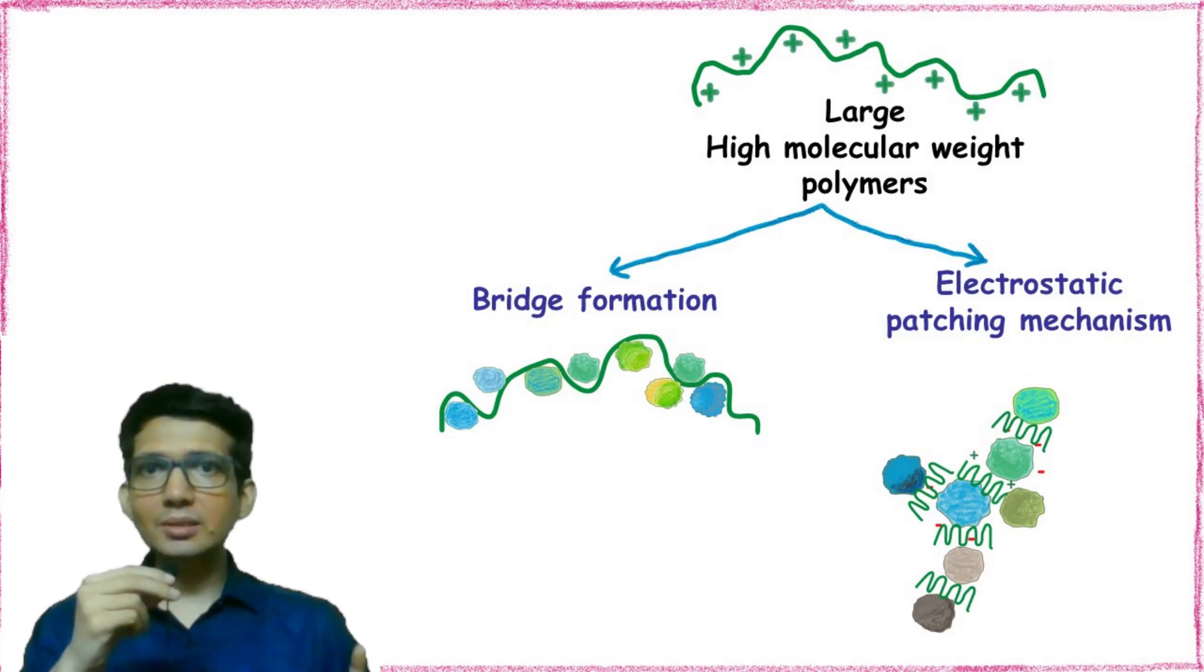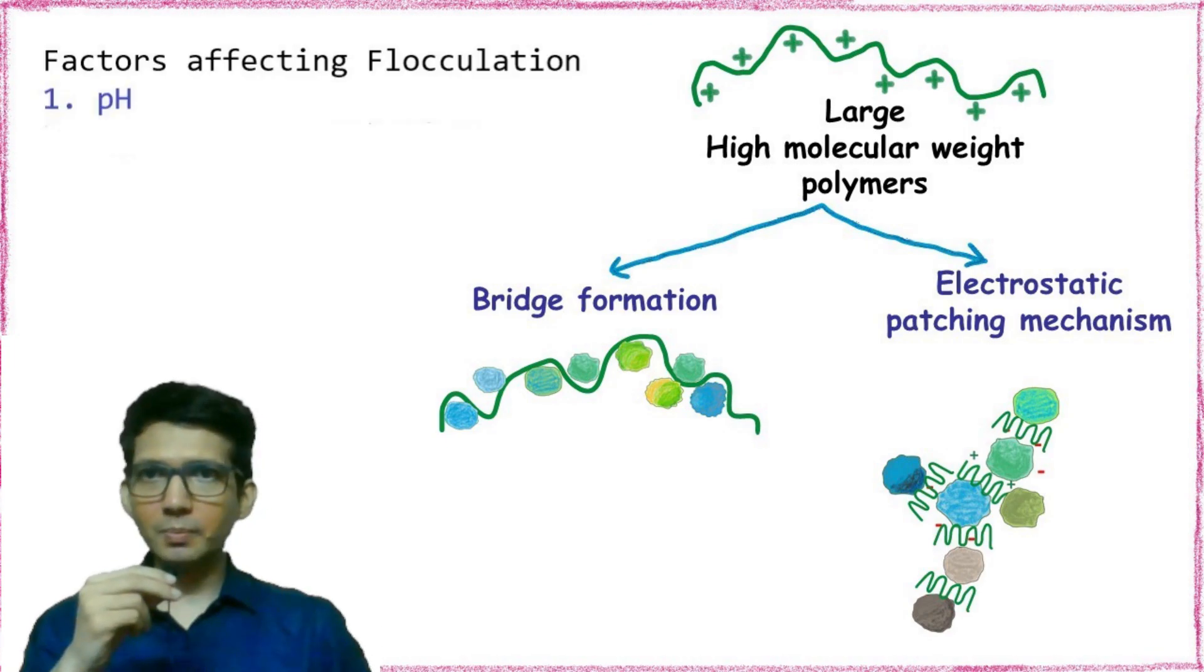Now there are several parameters which affect coagulation and flocculation. One of the most important parameters is the pH. Since pH can affect the net charge on the functional groups, the pH of solution must be kept optimum.